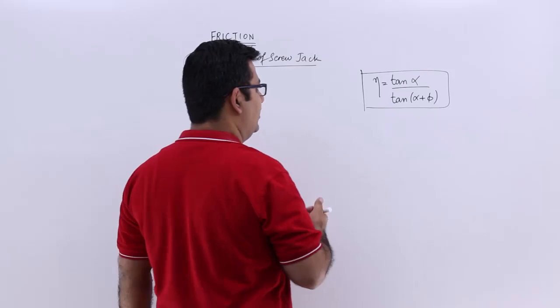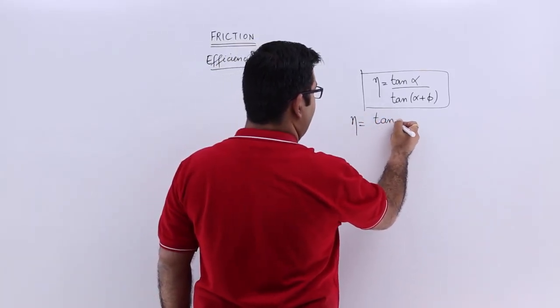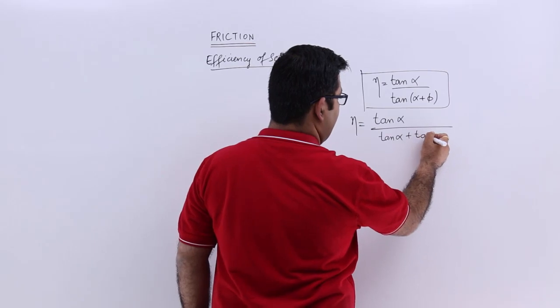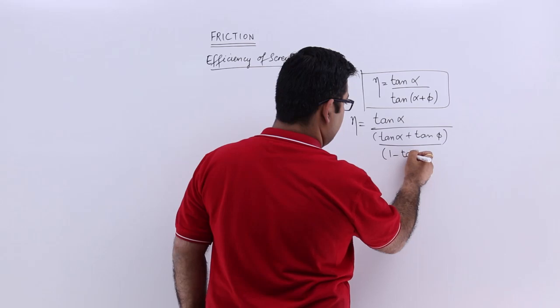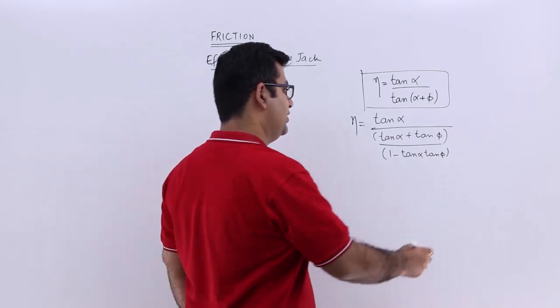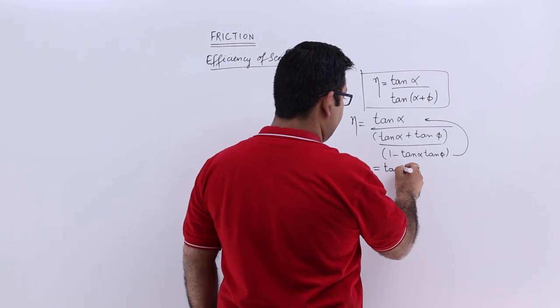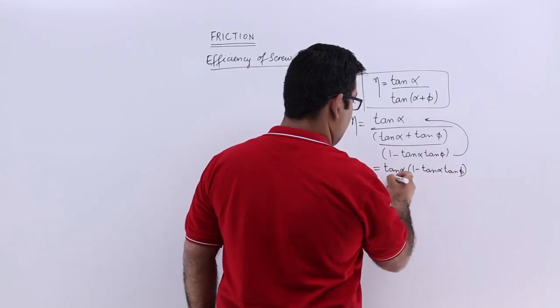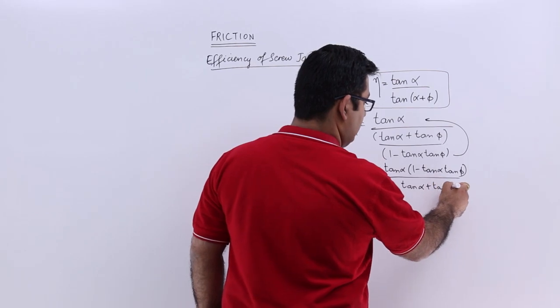So just start with this. If you manipulate this a bit you will get tan alpha upon tan alpha plus tan phi divided by 1 minus tan alpha tan phi. Bring this up over here, you will get tan alpha into 1 minus tan alpha tan phi upon tan alpha plus tan phi.